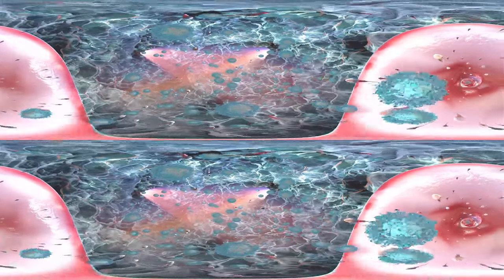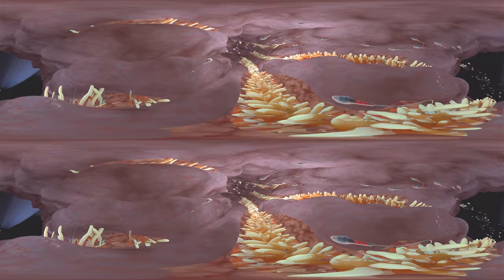Many sperms find their way into both fallopian tubes, but only one tube contains an unfertilized egg cell.